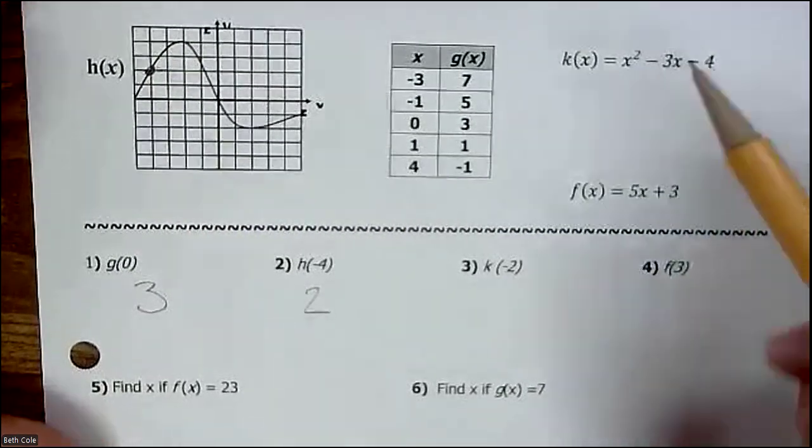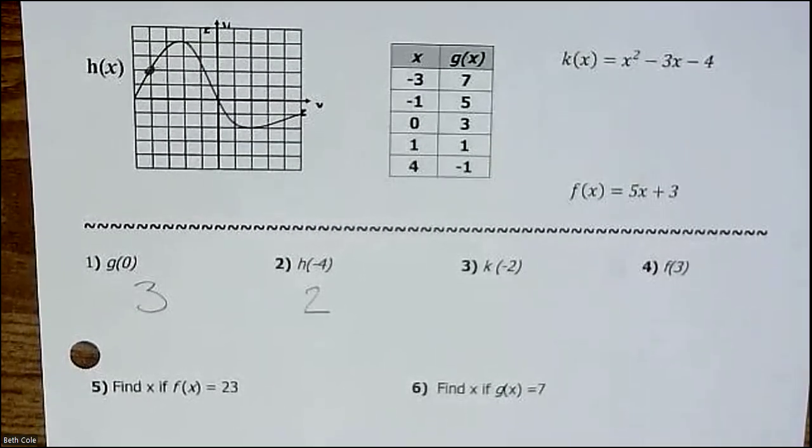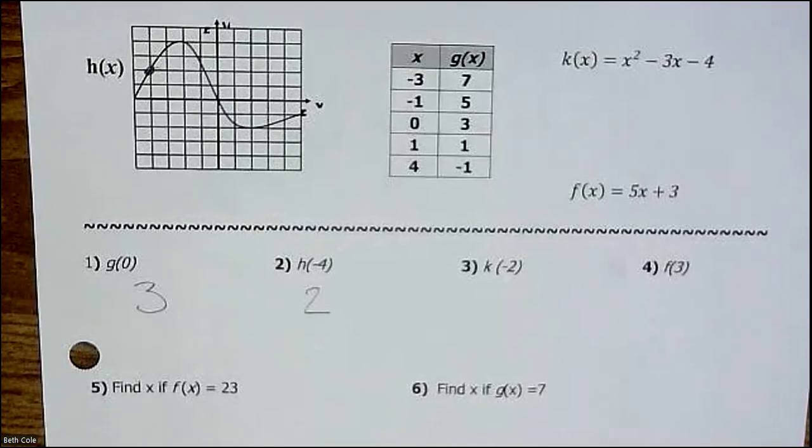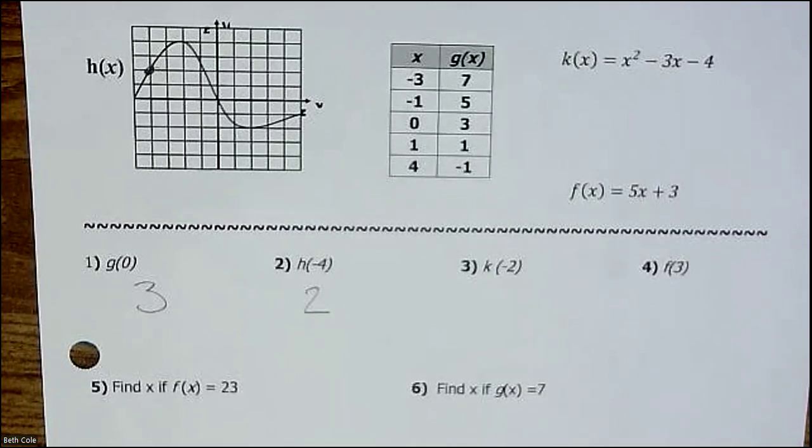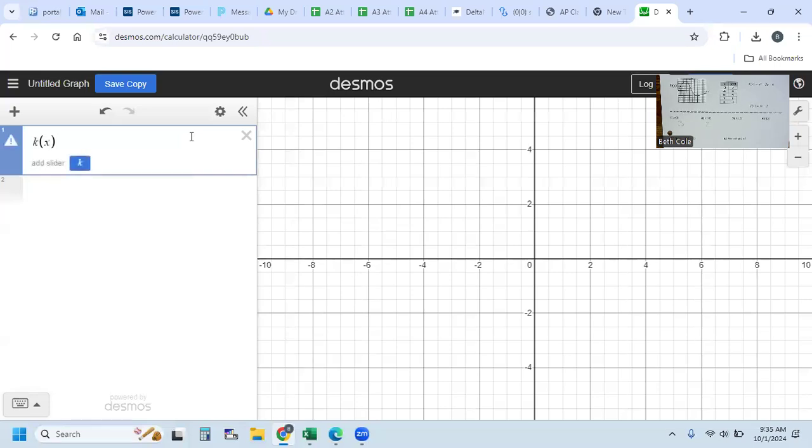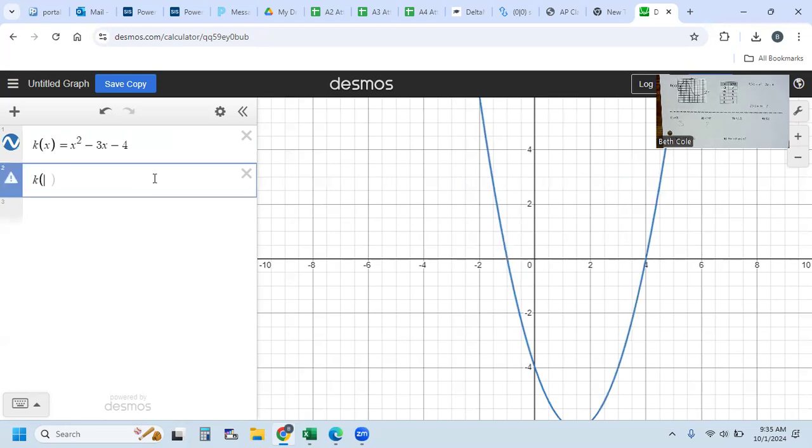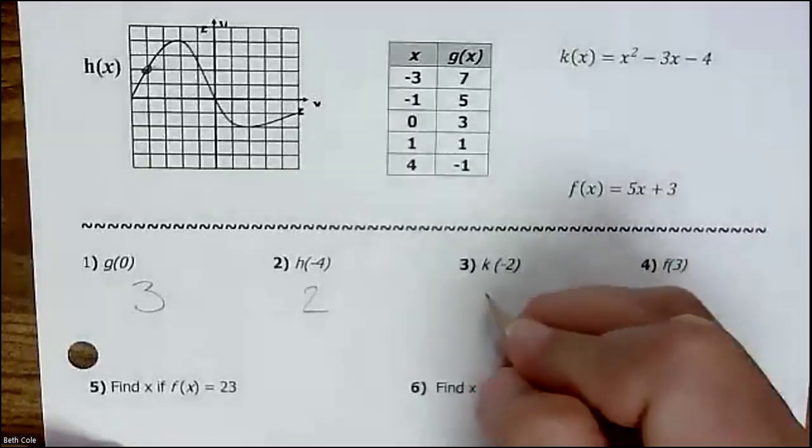This one says k of negative 2, so I'm going to use the calculator for this one. Let me share my screen. I'm going to type it exactly like it looks: k of x equals x squared minus 3x minus 4. The way you get that exponent is shift 6. Come down to the next box, k of negative 2, and it tells you your answer right there is 6.